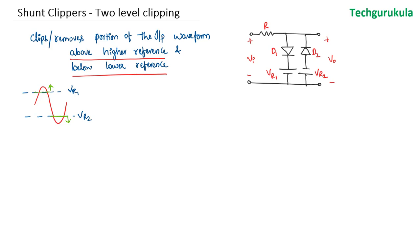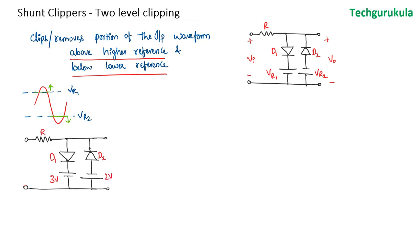We will assume the diodes are non-ideal, so we must take the cut-in voltage into consideration. In this example, VR1 is 3 volts and VR2 is minus 2 volts — note that the top side is negative and the bottom side is positive, so the magnitude is 2 volts.